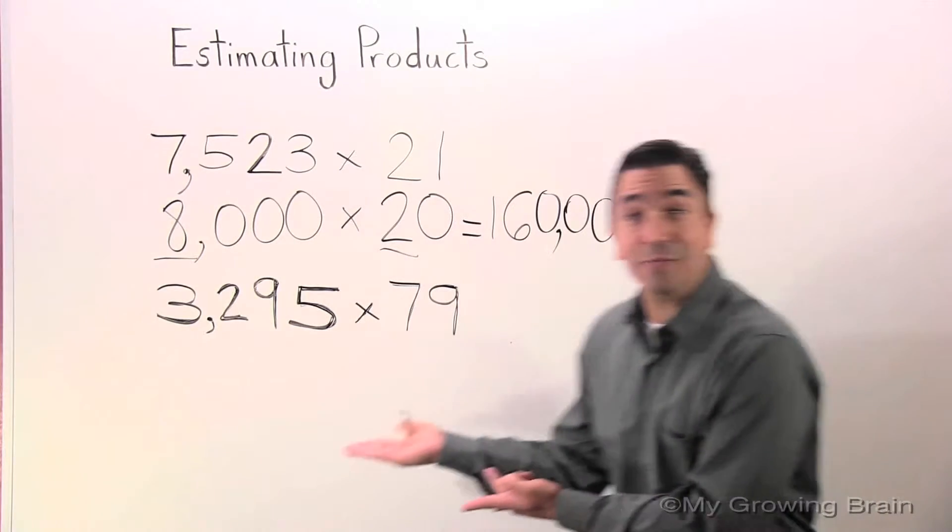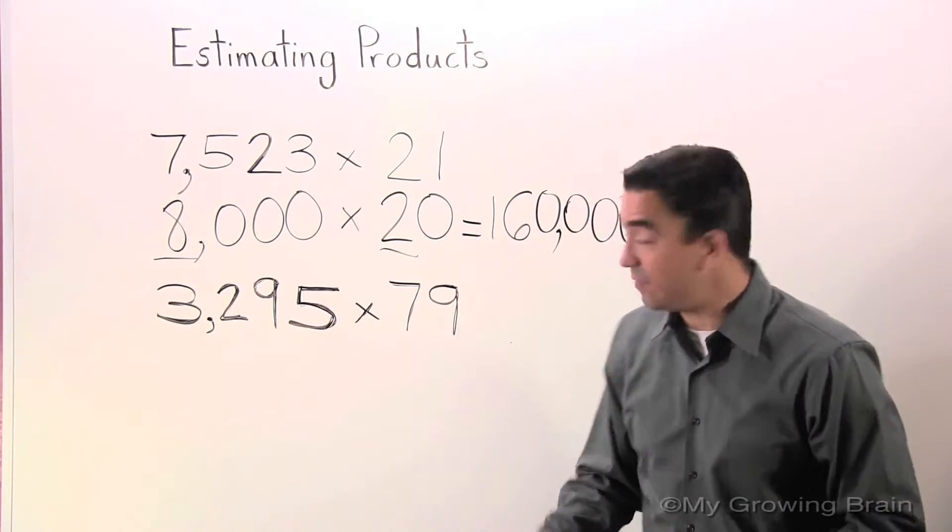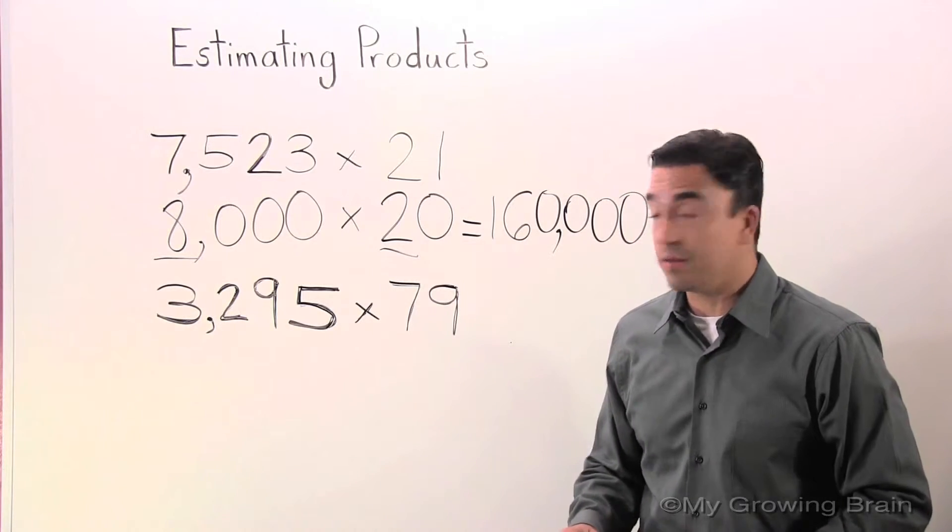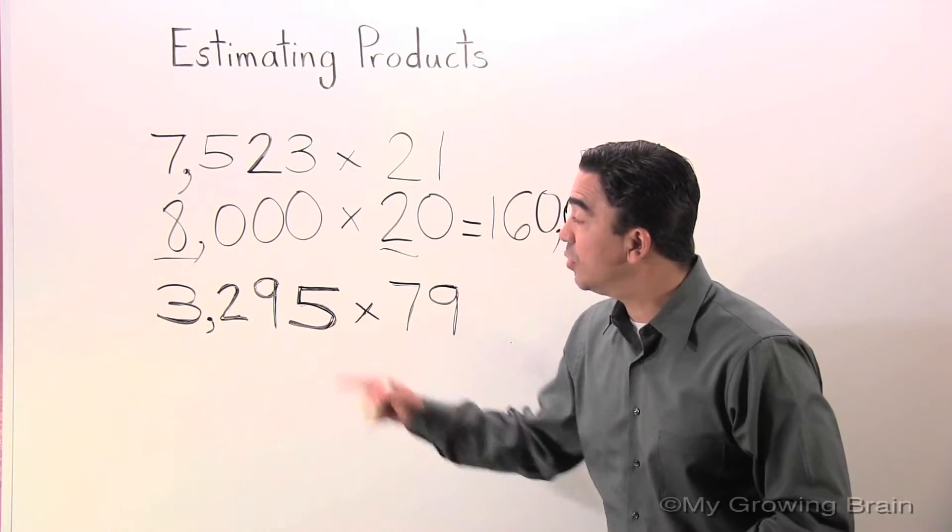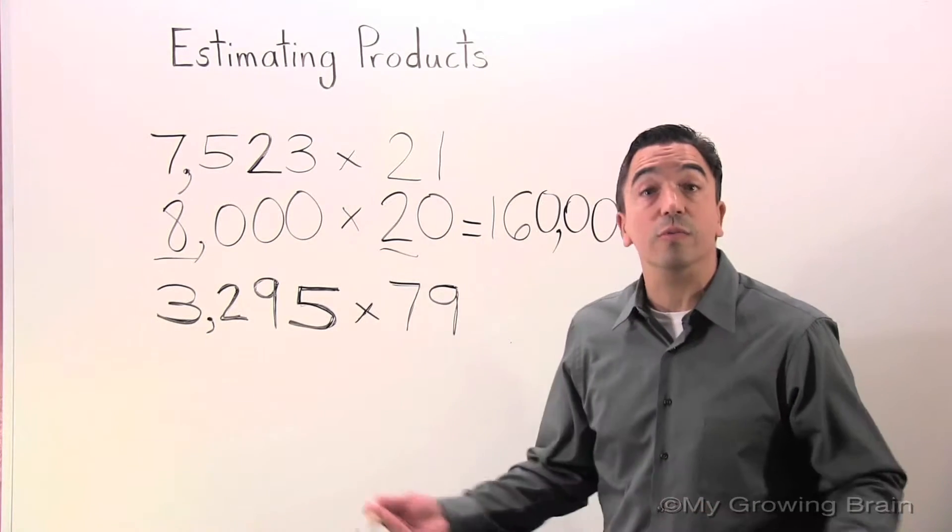Let's go to the next problem, which is 3,295 times 79. 3,295 to the nearest thousand is 3,000.